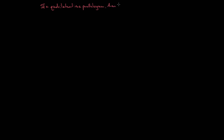We're going to take a look at another property of parallelograms. This one says that if a quadrilateral is a parallelogram, then the diagonals bisect. Before I get too far into this, I should talk about what it means to be a diagonal.